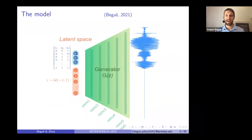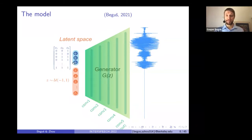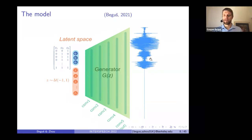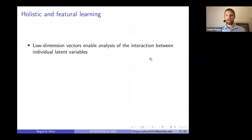Looking more closely at the generator: the latent space has about 100 uniformly distributed variables plus code variables, followed by a series of convolutional layers that transform the latent space into speech data or waveforms. In addition to lexical learning, we're also able to model sublexical learning with this architecture.